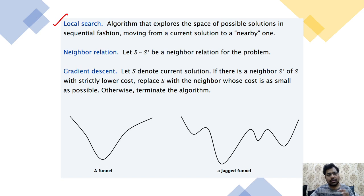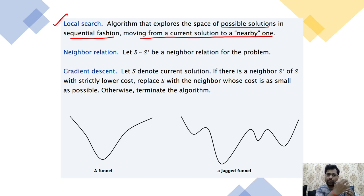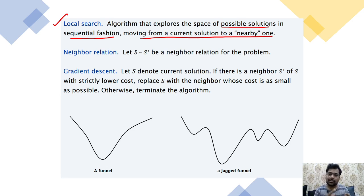Local search is defined as an algorithm that explores the space of possible solutions in sequential fashion, moving from the current solution to a nearby one. Whenever we start exploring, we should follow sequential fashion when finding the answer, and we must follow the neighborhood condition.